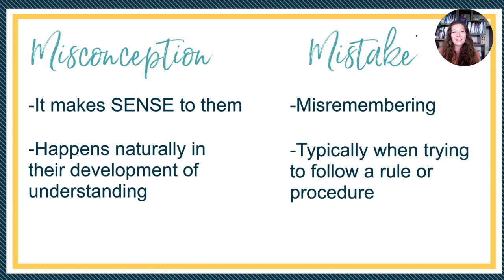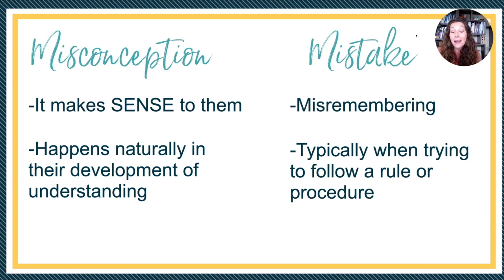A mistake is often when a child misremembers something like a fact or a procedure. It happens usually when they're trying to follow a rule and a procedure but they don't remember the exact steps, or they see a fact — like sometimes when I see four times three, I think seven just because I see four and three and I think that makes a seven because I added instead of multiplying. That's a mistake.